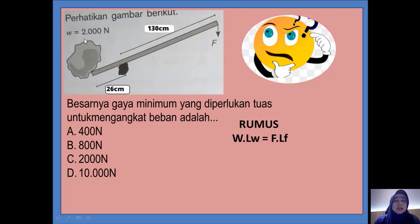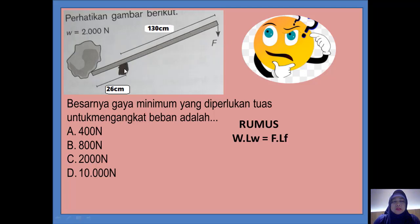Misalnya W-nya 2000 Newton. W itu berat dari beban, yaitu si batu. Ini ada titik tumpuh yang diganjel, pengganjel, supaya bisa dicongkel batunya. Jarak dari beban ke titik tumpuh adalah 26 cm. Sedangkan dari titik tumpuh ke kuasa — F itu kuasa, yaitu tenaga orang yang ingin memindahkan batu ini — jarak antara titik tumpuh dengan kuasa adalah 130 cm.